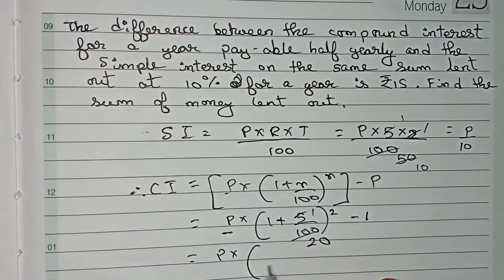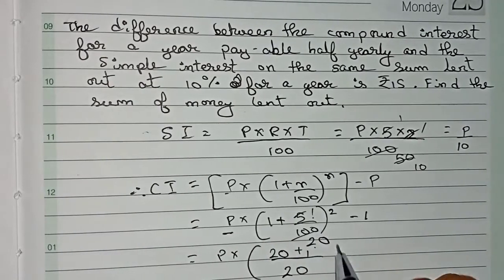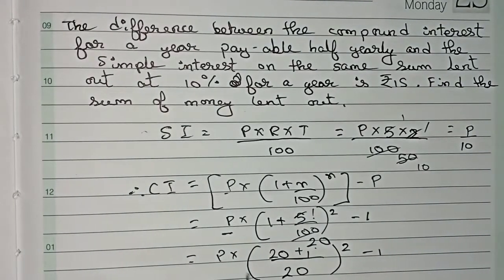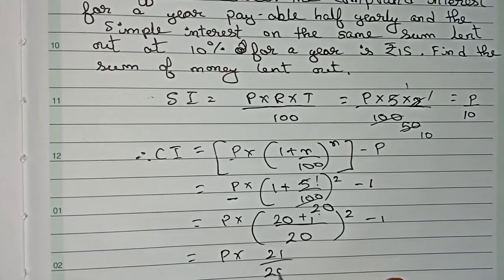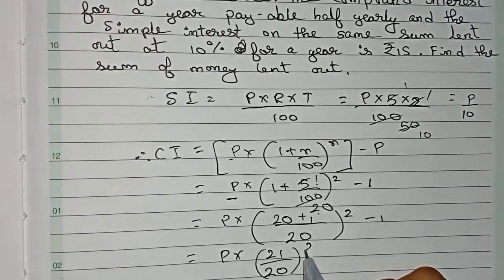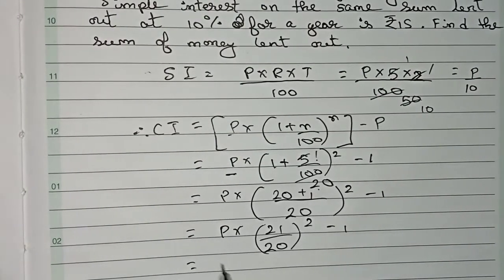Principle times, we take 20 as the denominator, so (20 + 1)/20 to the power 2 minus 1. So it becomes principle × (21/20)^2 minus 1.